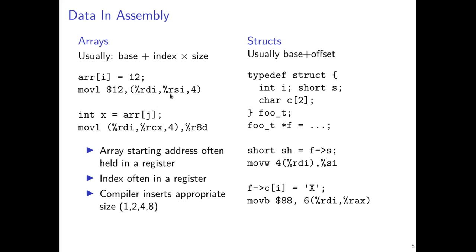If extracting an element from an array, the source is the main memory location. RDI holds the start of the array, RCX probably corresponds to variable j, size 4 indicates 32-bit integers, and RAX is probably the variable x being loaded into. The compiler automatically detects whether this is an array of integers or longs, loads the array start address into a register, and uses the type system to determine element sizes — ints being 4, characters being 1 — then picks the appropriate constant to multiply indices by for the array offset calculation.